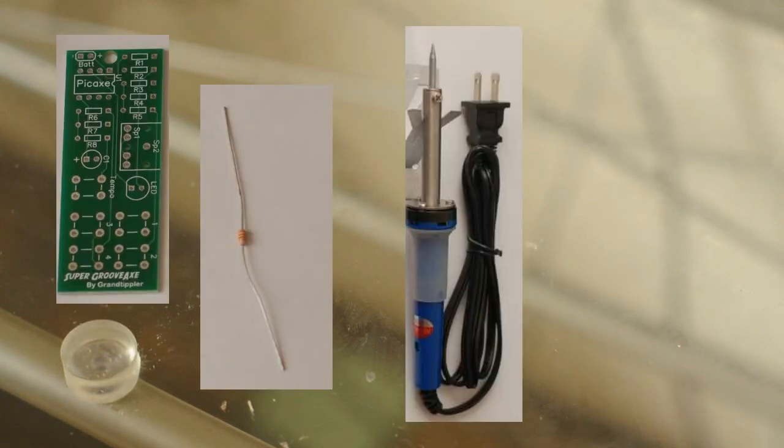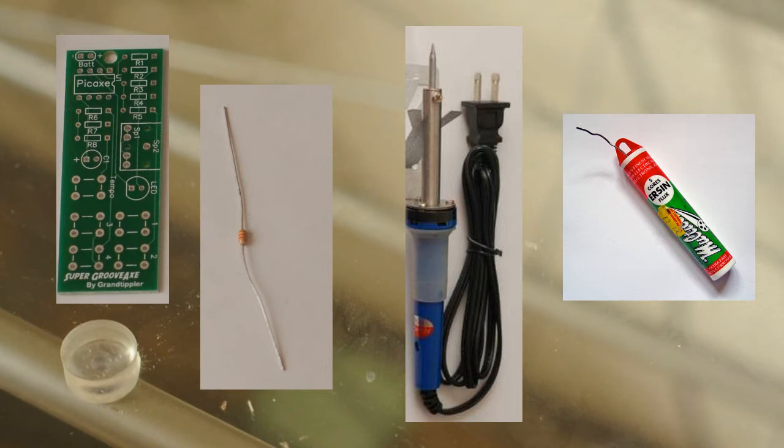Before we begin, I want to give you the big picture of soldering. Here's the idea. Take two pieces of metal, heat them up, and let solder melt between them, bonding them.